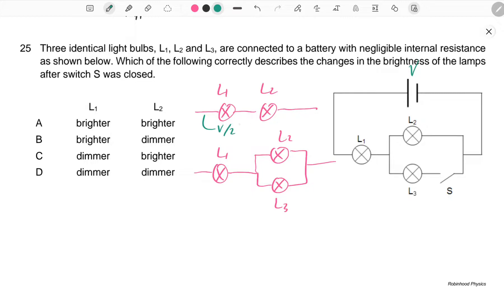Then this will be V/2, here also gets V/2. But once the switch is closed, R effective here equals R/2, so the voltage here will be 2/3 V.